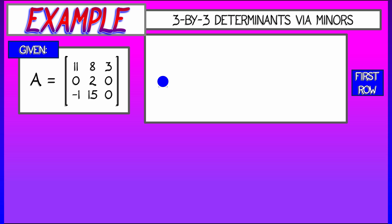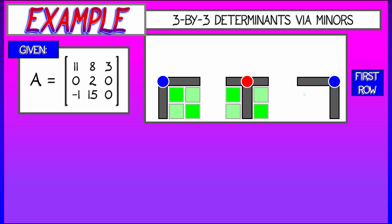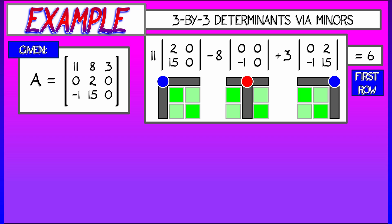Let's see what happens when we expand about the first row using A11 and A12 and A13, as we've done before. This gives us 11 times the determinant of 2, 0, 15, 0, minus 8 times the determinant of 0, 0, negative 1, 0, plus 3 times the determinant of 0, 2, negative 1, 15. And those computations are really easy. We get an answer of six. That's great. Wonderful. Fine.